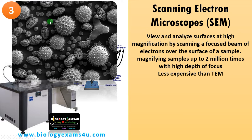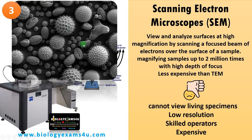SEM provides good resolution, high magnification, three-dimensional images with very high depth of view — as seen in these images of pollen grains. The downside is it cannot view live specimens, resolution is lower compared to TEM, and skilled operators are required as it is expensive. An advantage over TEM is that specimen preparation is comparatively easier.